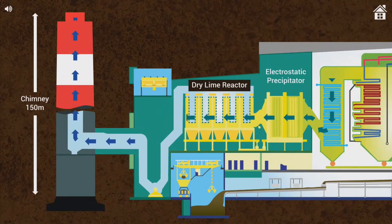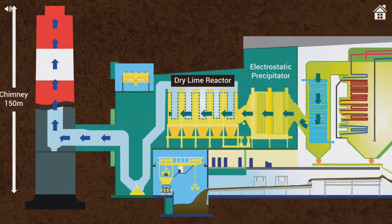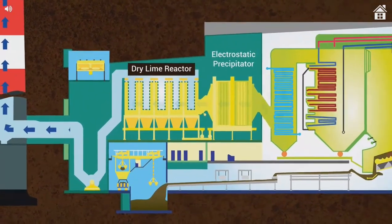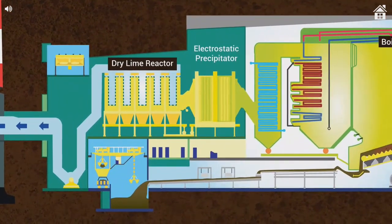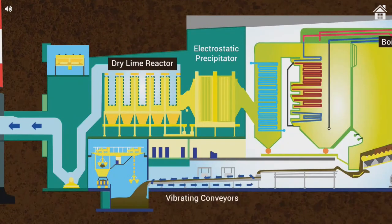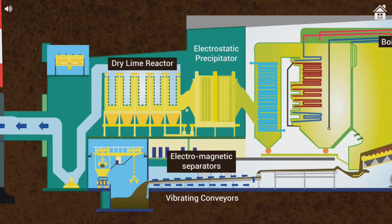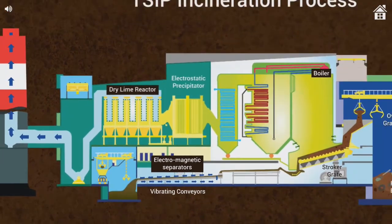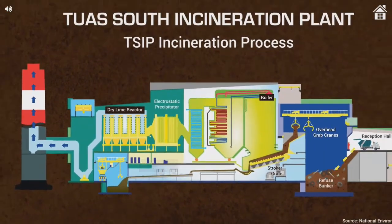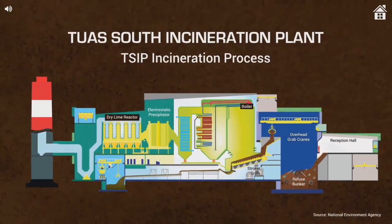The ash or residue from the furnace is transported to the ash pit via vibrating conveyors. Ferrous metals are picked up from the ash by overhead electromagnetic separators and sold as scrap.